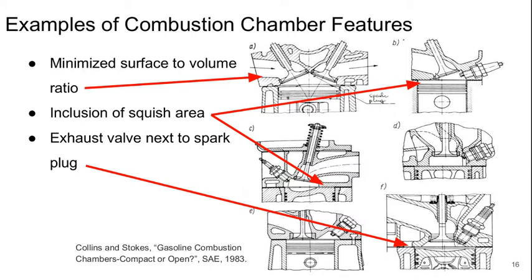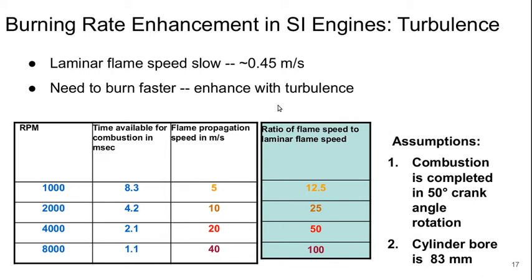What we're trying to do in these different cases is make sure the gas is moving around and mixing well. We really need to generate turbulence in order to increase the gas burning rate in spark ignition engines. The problem is that fundamentally the speed at which a flame wants to move in a premixed air-fuel mixture is pretty slow — on the order of about half a meter per second.